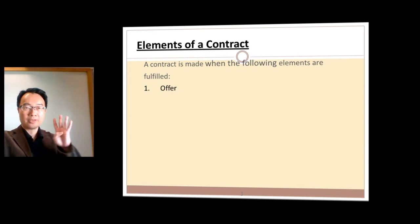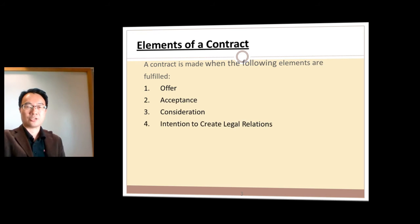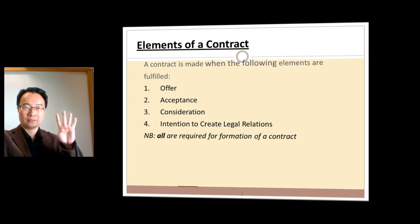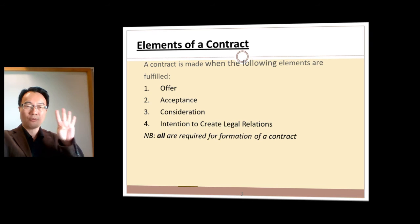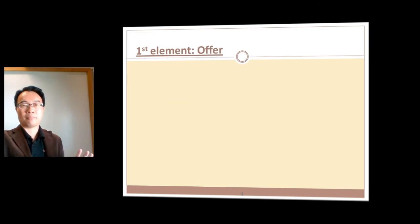There are four things you need: offer, acceptance, consideration, and intention. You need all four of these to form a contract. Take note of that — you need all four of these things. The problem is you don't know what they mean, so let's go into them one by one.